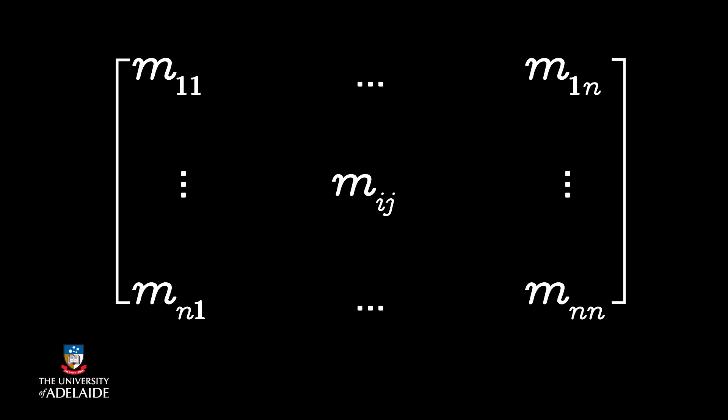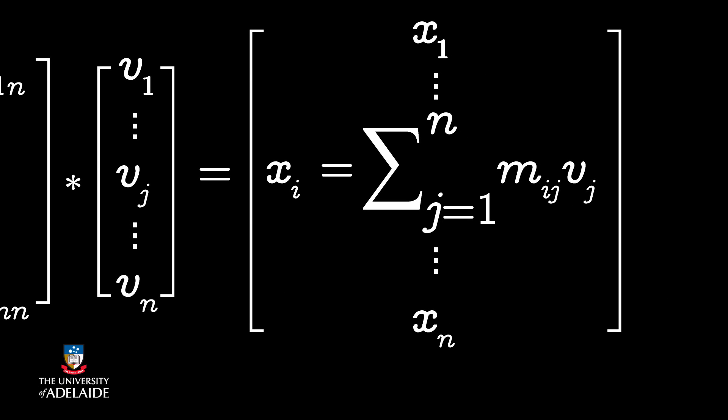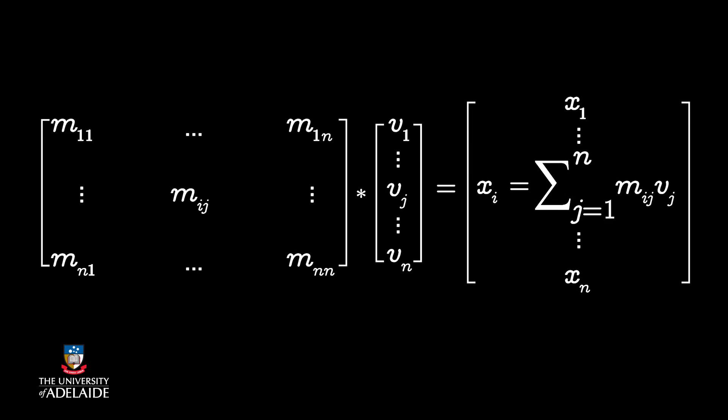Suppose you have a square matrix M with dimension n. The element mij takes place in row i and column j. Also, you have vector v of length n whose j-th element is vj. So the multiplication of M and v would be a vector of length n whose i-th element is the summation of mij multiplied by vj, with j from 1 to n. When n equals 100, there is no need to do this multiplication with a distributed file system or MapReduce. But this calculation is the key part of ranking web pages, which uses a matrix with a size of tens of billions.